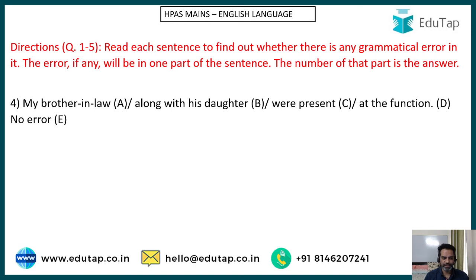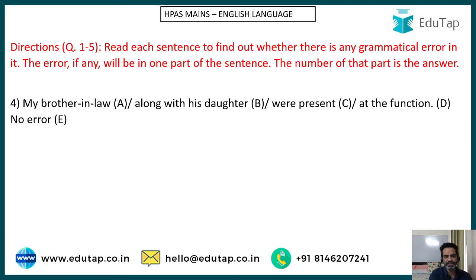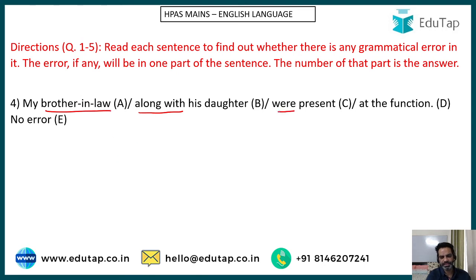Question number four: 'My brother-in-law along with his daughter were present at the function.' A similar question appeared in the actual paper shown earlier. We tend to believe there are two people — brother-in-law and his daughter — but the conjunction plays a very important role beside the subject. Daughter is not the subject; the subject is only 'my brother-in-law,' which is singular. Therefore, the verb should also be singular. The correct answer is 'was,' not 'were.' For these questions, you have to build up your grammatical concepts.